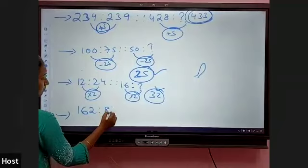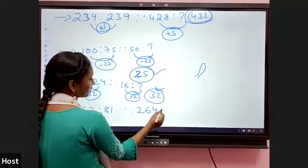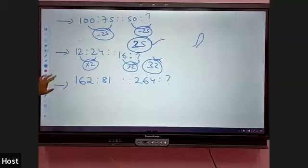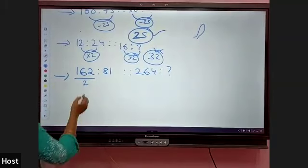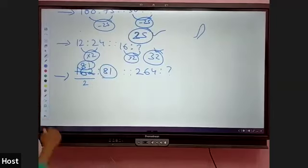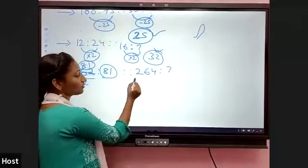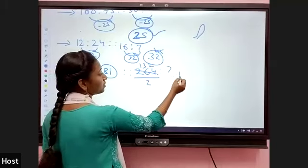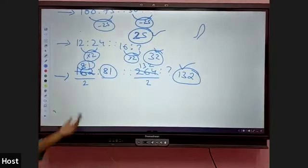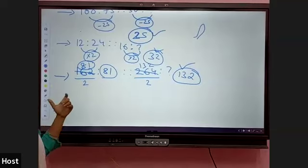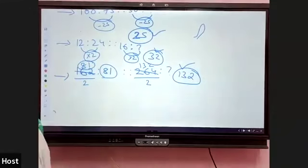For division: 162 is to 81, then 264 is to how much? Here 162 divided by 2 gives 81. Applying the same: 264 divided by 2 gives 132. So the answer is 132. This is the division model.